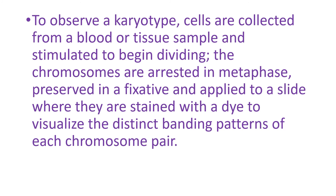Now, how do we get this karyotype? To observe this karyotype, cells are collected from a blood or tissue sample and they are stimulated to begin dividing. This is because chromatin reticulum is found in active cells, and chromosomes can be observed only in actively dividing cells.